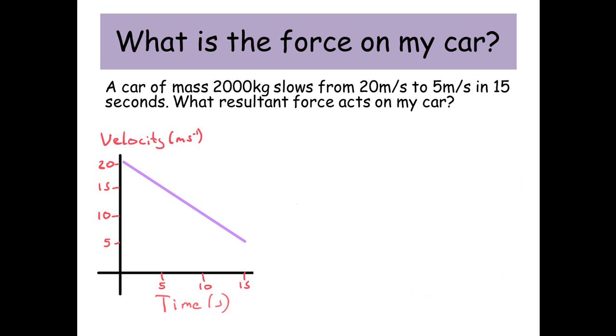Okay, well let's have a look at an alternative way of doing this. We're going to use F equals MA. Remember acceleration is V minus U over T, the final velocity minus the initial velocity divided by the time taken. So this is 5 minus 20 divided by 15. And we get minus 1 meters per second squared.